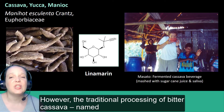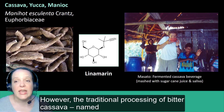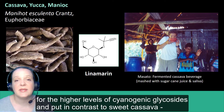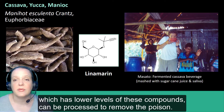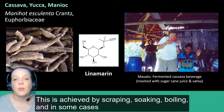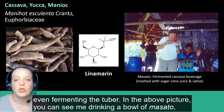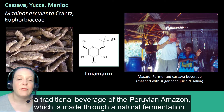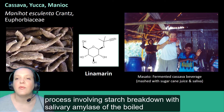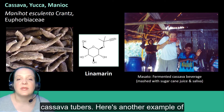However, the traditional processing of bitter cassava — named for its higher levels of cyanogenic glycosides, in contrast to sweet cassava which has lower levels — can be processed to remove the poison. This is achieved by scraping, soaking, boiling, and in some cases even fermenting the tuber. In the above picture, you can see me drinking a bowl of Masato, a traditional beverage of the Peruvian Amazon, which is made through a natural fermentation process involving starch breakdown with salivary amylase of the boiled cassava tubers.